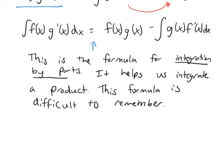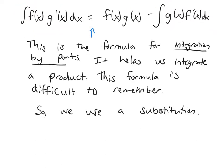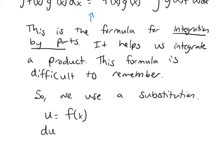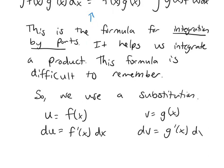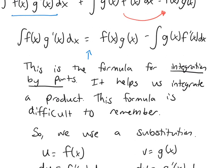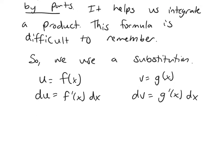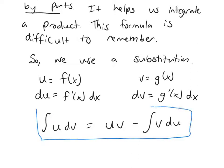To simplify, we make a substitution: let u equal f(x), so du equals f'(x) dx. Let v equal g(x), so dv equals g'(x) dx. Using these new variables in our formula, we get a much cleaner version: the integral of u dv equals u times v minus the integral of v du. This is the standard form of the integration by parts formula you would typically see.